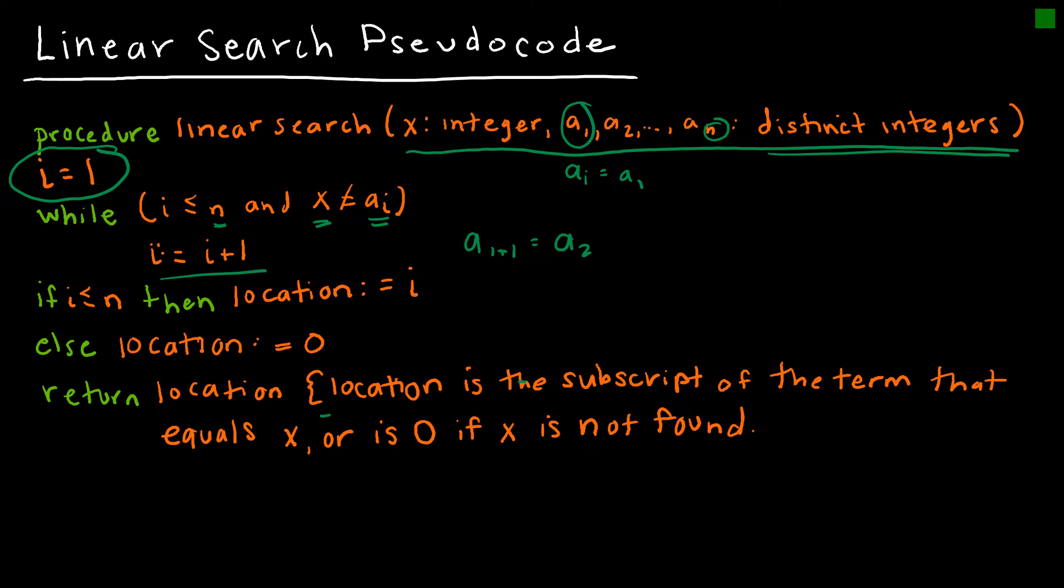Then we say if i, being the subscript, is less than or equal to n, then the location is i, otherwise the location is 0. So what does all that mean? That means it's a 0 if we haven't found the value that we're looking for. The return is the location, and the location is i, such that i gives us the location of our value of x. So location is the subscript, which is i, of the term that equals x, or 0 if it is not found. So that's where that else comes in. If i is less than or equal to n, then the location is i. Otherwise, the location is 0, meaning it was not found.